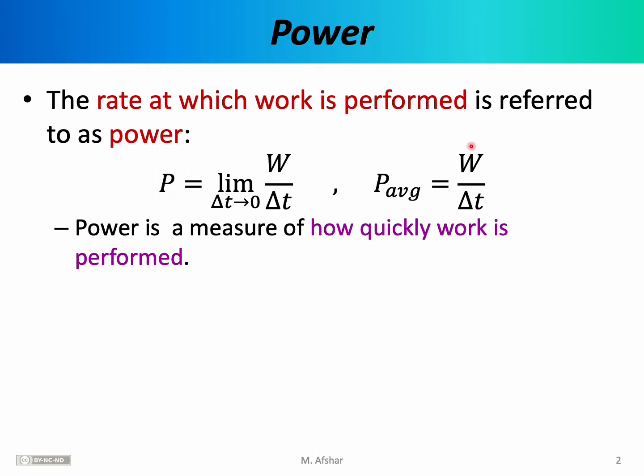On the other hand, if you do the same amount of work, 100 joules, in only one second, then your power output will be 100 joules per second. That tells us you've done the same work but much more quickly. The rate at which the work was performed was greater.